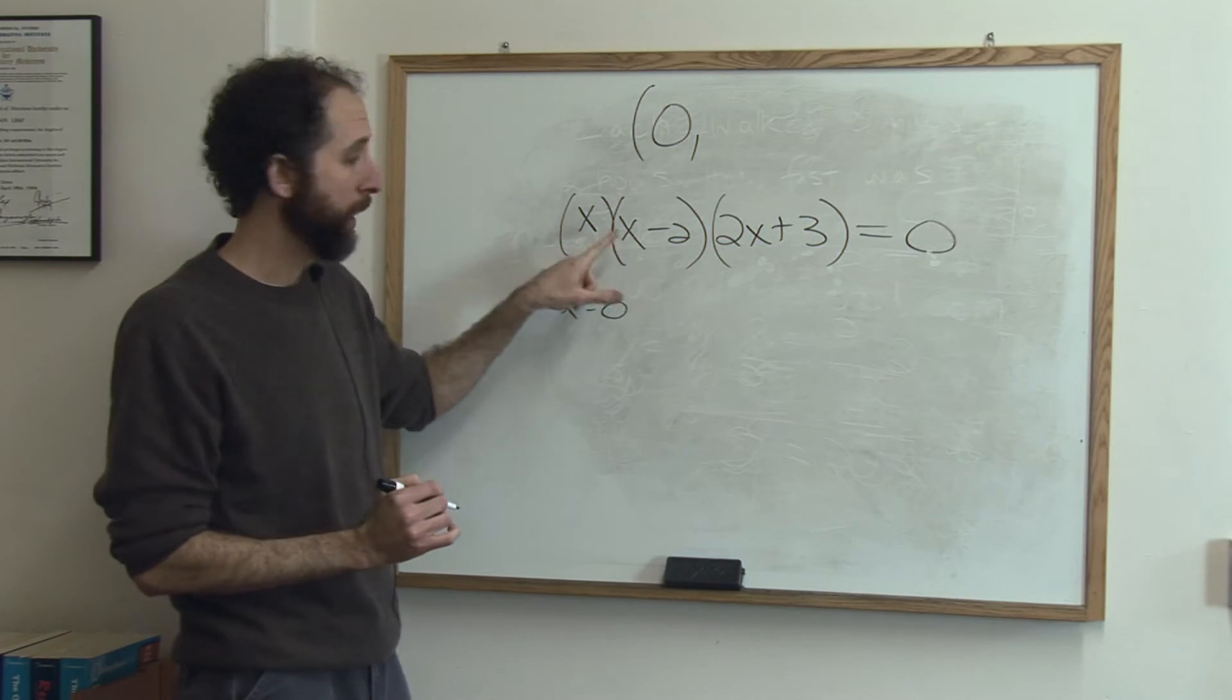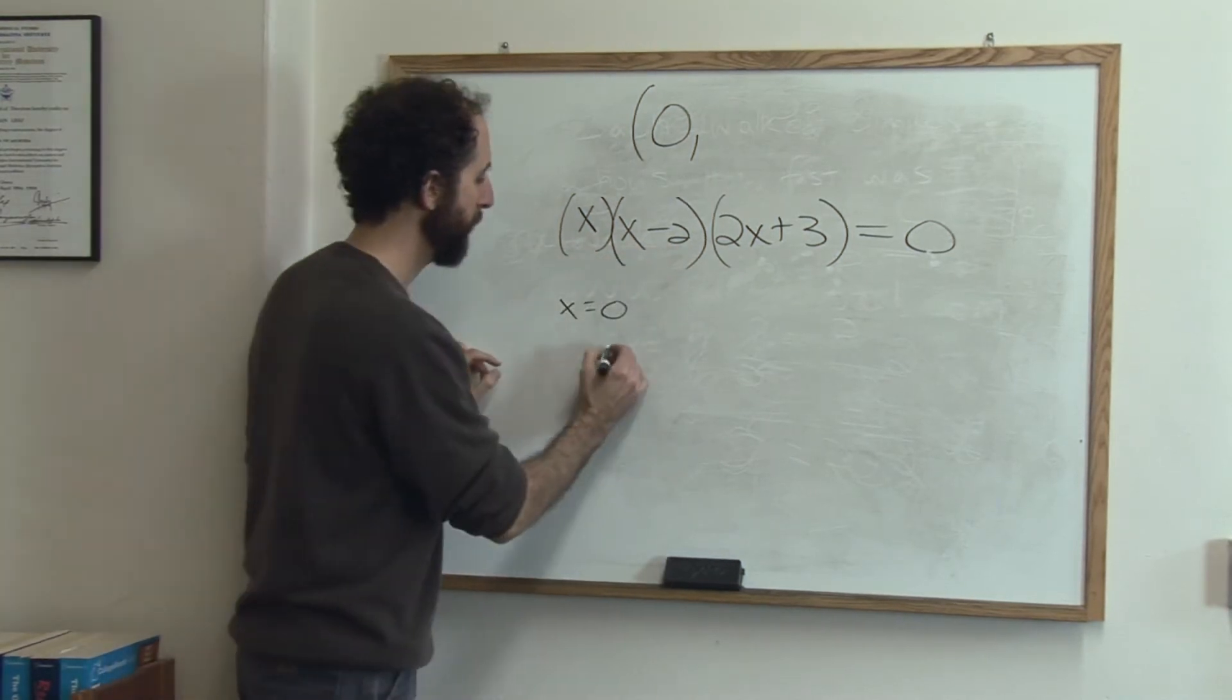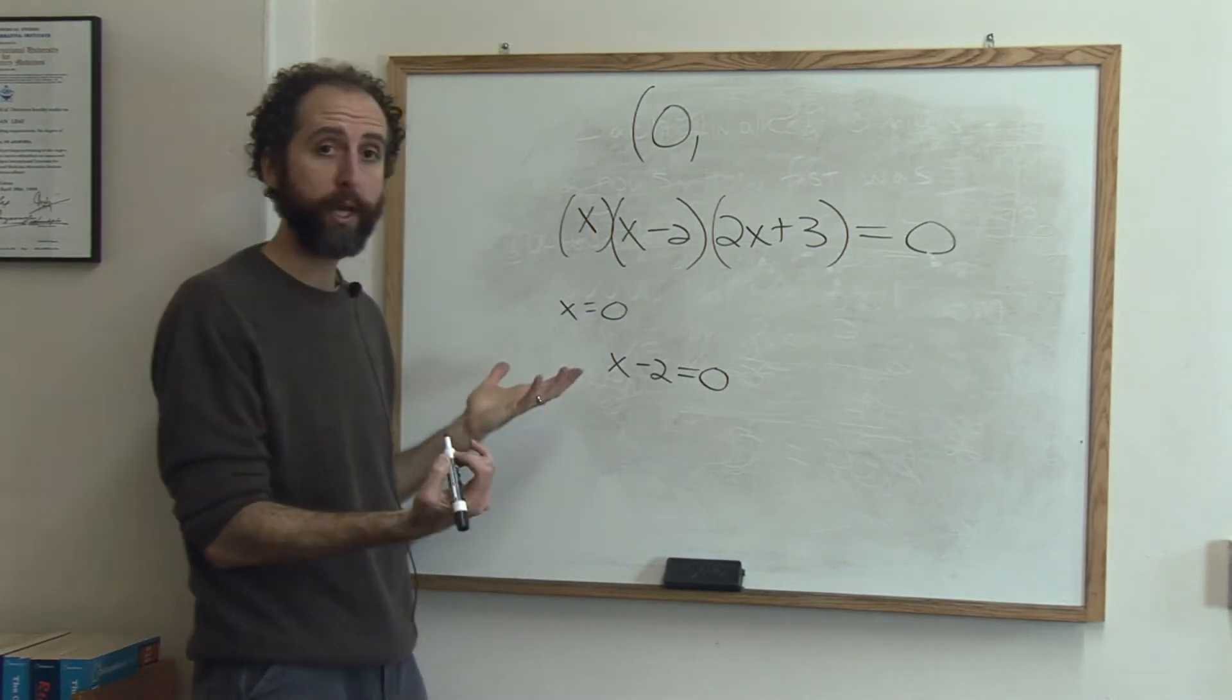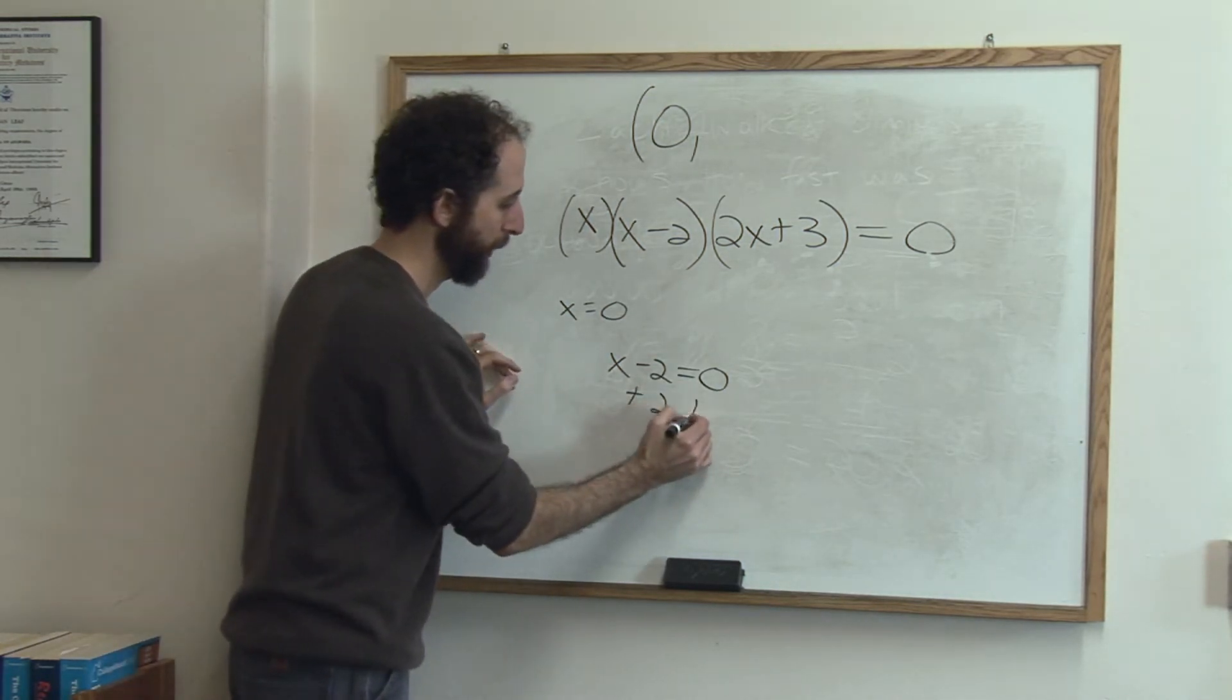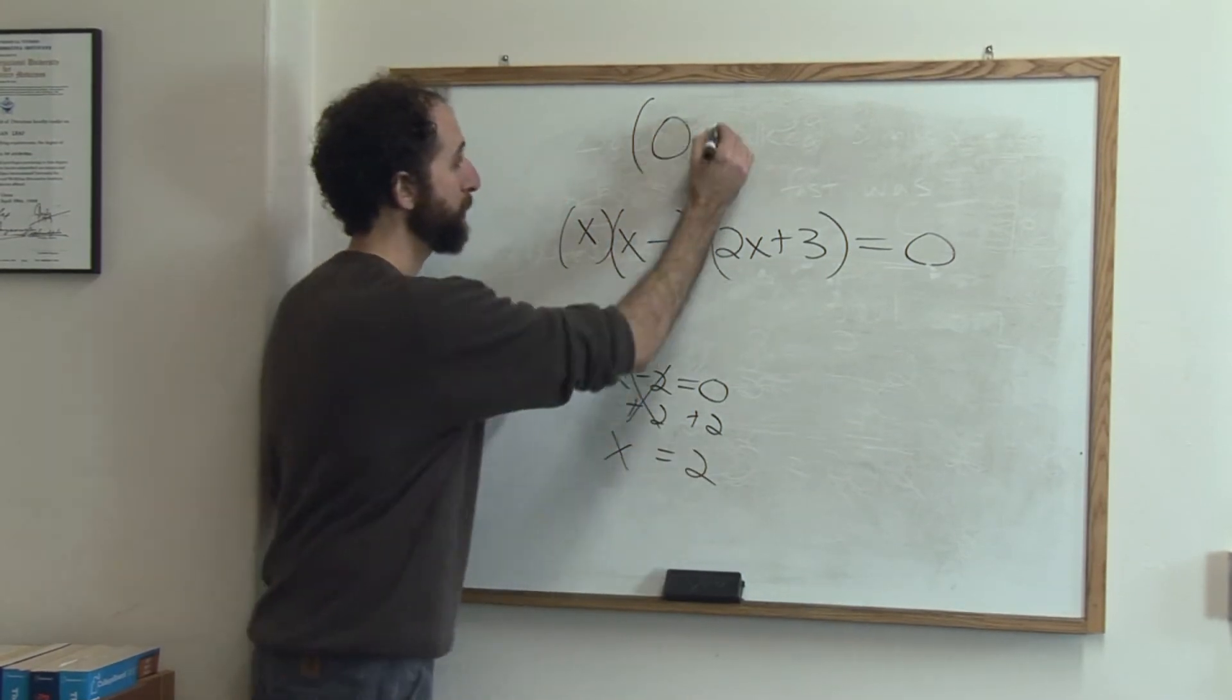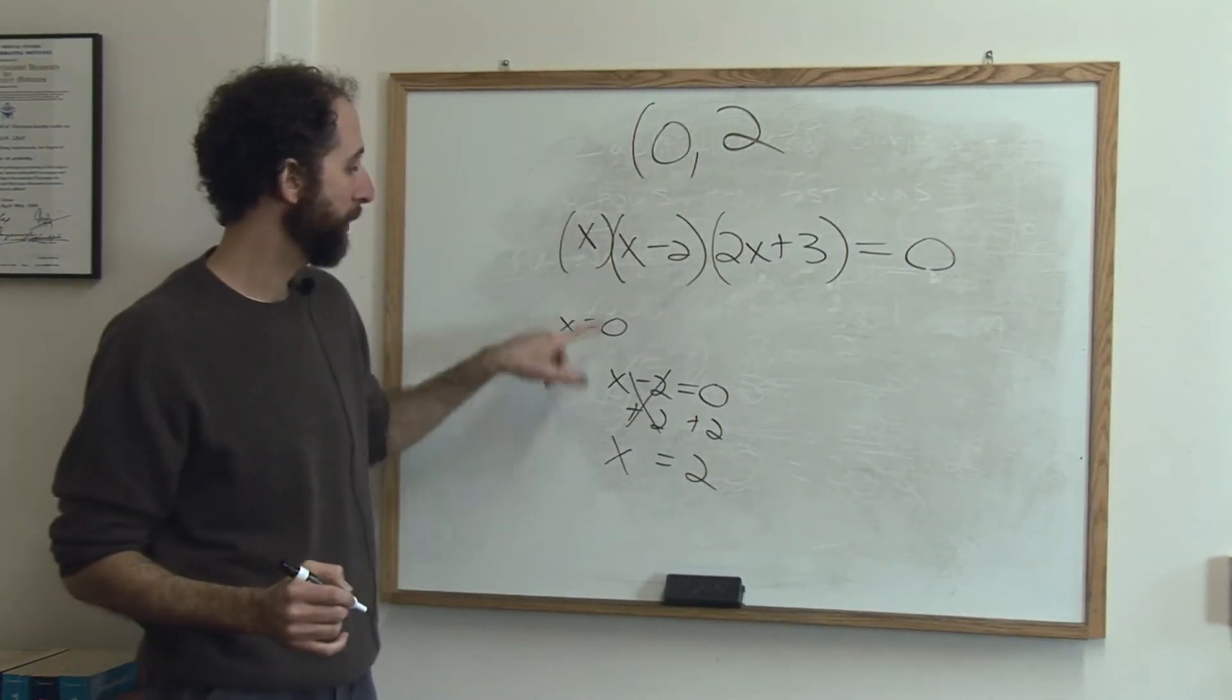Or, we could have two. x minus two. So you say to yourself, x minus two, that could equal zero. What do we need x to be? Solve it out. x equals two. So that's my second answer. x could be zero, x could be two.